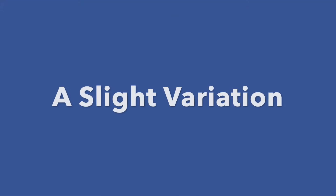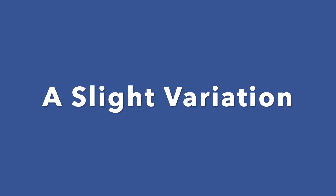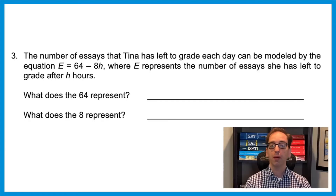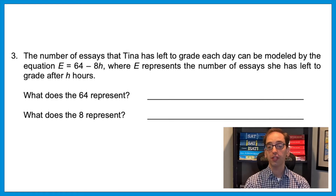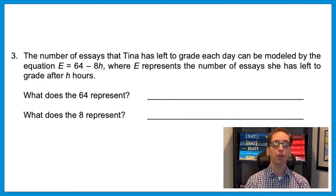In video 24 I introduced the concept of cousin questions — whenever you can, you want to identify the brand of question that's in play. This credit card question is very much a cousin of Melissa's balloon. Now let's look at a harder variation. The number of essays that Tina has left to grade each day can be modeled by the equation e equals 64 minus 8h, where e represents the number of essays left to grade after h hours. What does the 64 represent and what does the 8 represent?